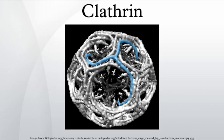Clathrin is a protein that plays a major role in the formation of coated vesicles. Clathrin was first isolated and named by Barbara Pierce in 1975. It forms a triskelion shape composed of three clathrin heavy chains and three light chains. When the triskelia interact, they form a polyhedral lattice that surrounds the vesicle. This is how clathrin gets its name, from the Latin clathratus, meaning 'like a lattice.' Coat proteins, like clathrin, are used to build small vesicles in order to transport molecules within cells.